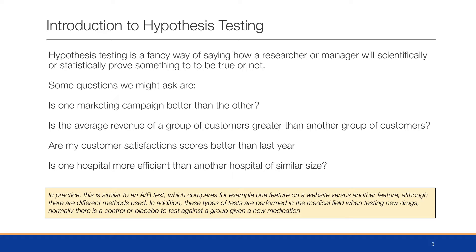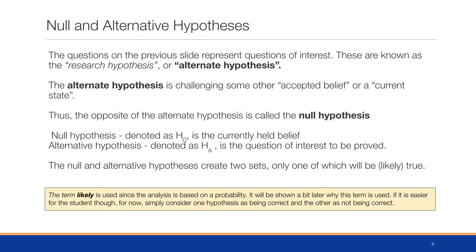These types of tests are also performed in the medical field when testing new drugs. Normally there is a control group — people who didn't receive the drug but had a placebo — against a group given a new medication. It's important to note that you can look at averages and say you did better this year over last year, but what we're really trying to determine is whether those averages are statistically different from each other, or whether it was just random chance that you were slightly above or below the comparison value.